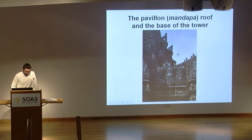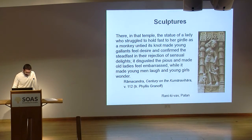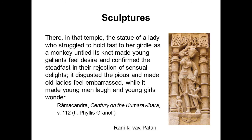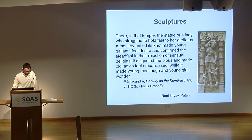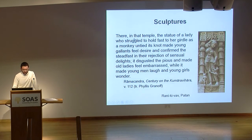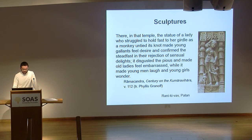Phyllis Granoff has related one of these stanzas by Ramachandra, which describes a young woman annoyed by a monkey, to sculptures preserved in extant monuments. Thus, the picture in my slide was taken at the stepwell of Patan. And here you can read the stanza in Phyllis Granoff's translation: 'There in that temple, the statue of a lady who struggled to hold fast to her girdle as a monkey untied his knot made young gallants feel desire and confirmed the steadfast in their rejection of sensual delights. It disgusted the pious and made all ladies feel embarrassed while it made young men laugh and young girls wonder.'